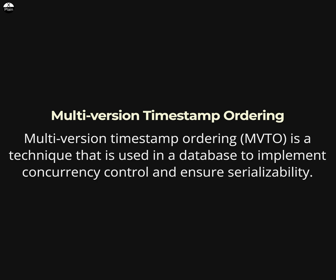When a transaction updates a row, it creates a new version of the row with a timestamp that is greater than the timestamp of any previous version. This ensures that the updates made by the transaction are not overridden by other transactions. MVTO is a useful technique for implementing serializability in a database, as it allows transactions to be ordered in a way that ensures they do not interfere with each other and produce consistent results.